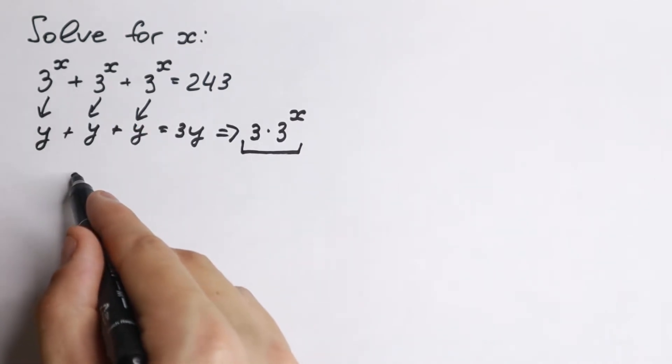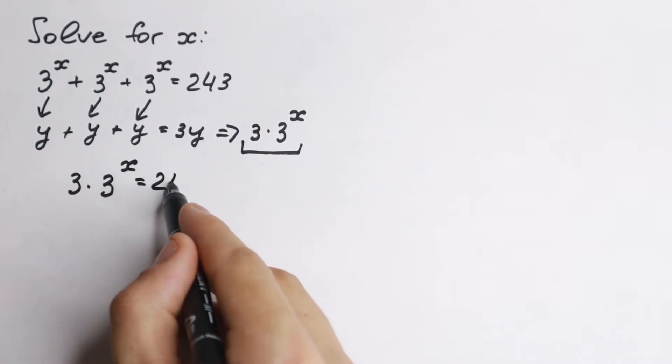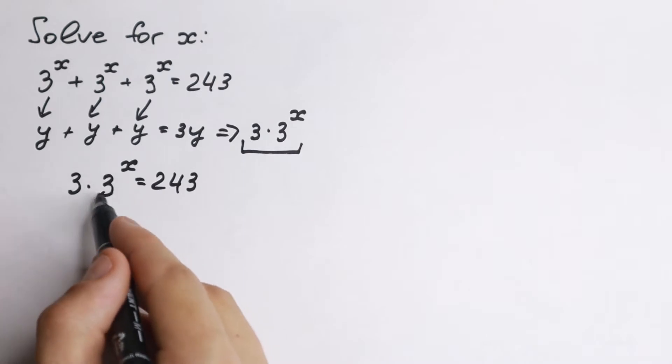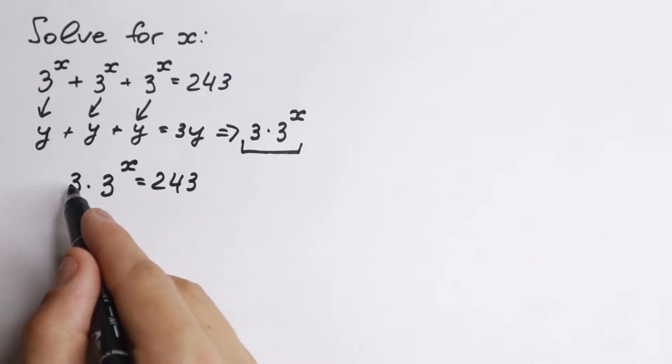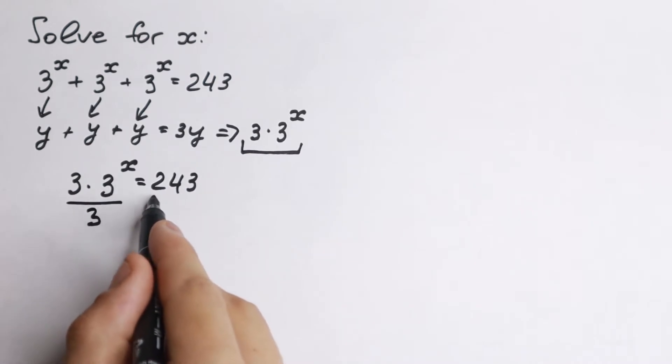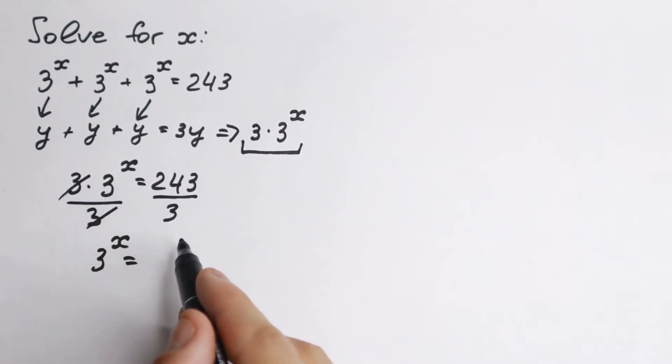So on the left right now we have 3 times 3^x equal to 243. What we're going to do next? We need all variables that we need to find on the left and all constants on the right. So dividing both sides by 3. Right here canceling this 3. As a result 3^x equals 243 divided by 3 equals 81.